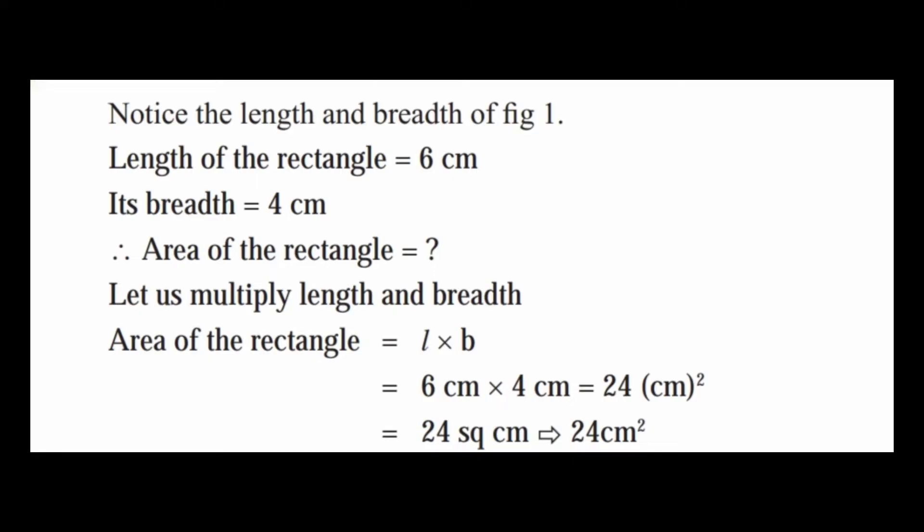Rashmi's paper has length equal to 6 cm and breadth equal to 4 cm. Area of the rectangle is found by multiplying the length and breadth. Area of rectangle is equal to L into B. That is 6 cm into 4 cm. 6 fours are 24, so the area is 24 cm².